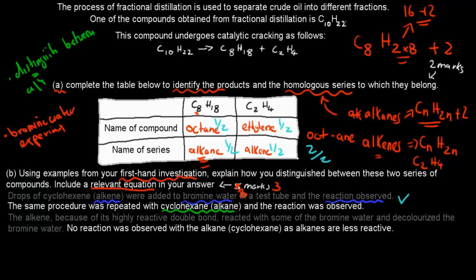Next, we have to talk about what happened. So the alkene, so that was the cyclohexene, the alkene, because of its highly reactive double bond, that was the difference, reacted with some of the bromine water and decolorized the bromine water.